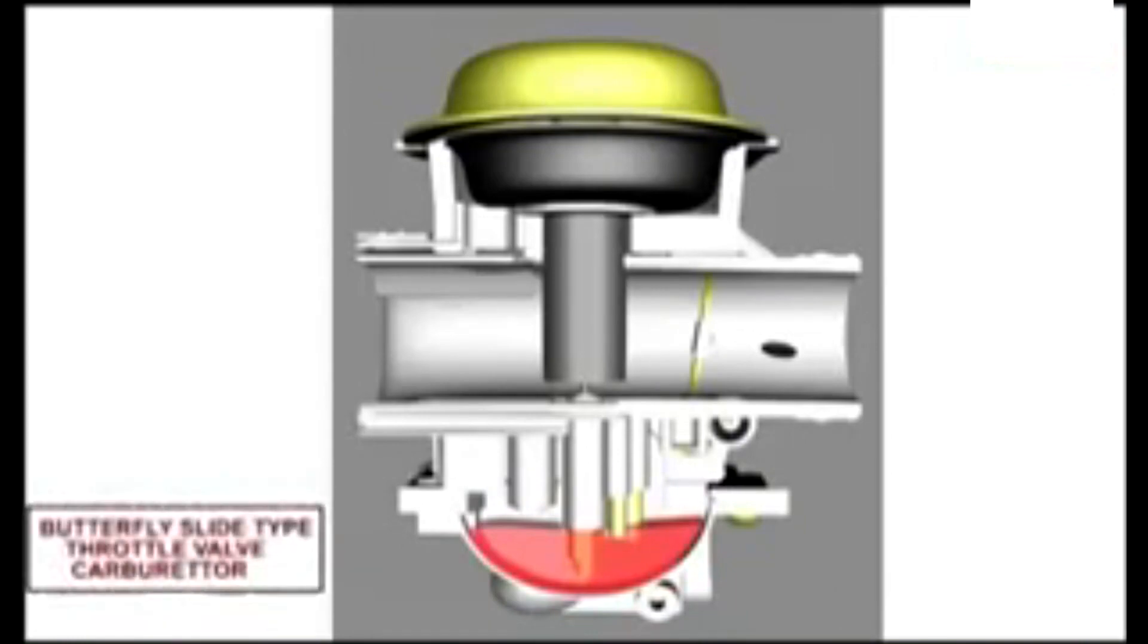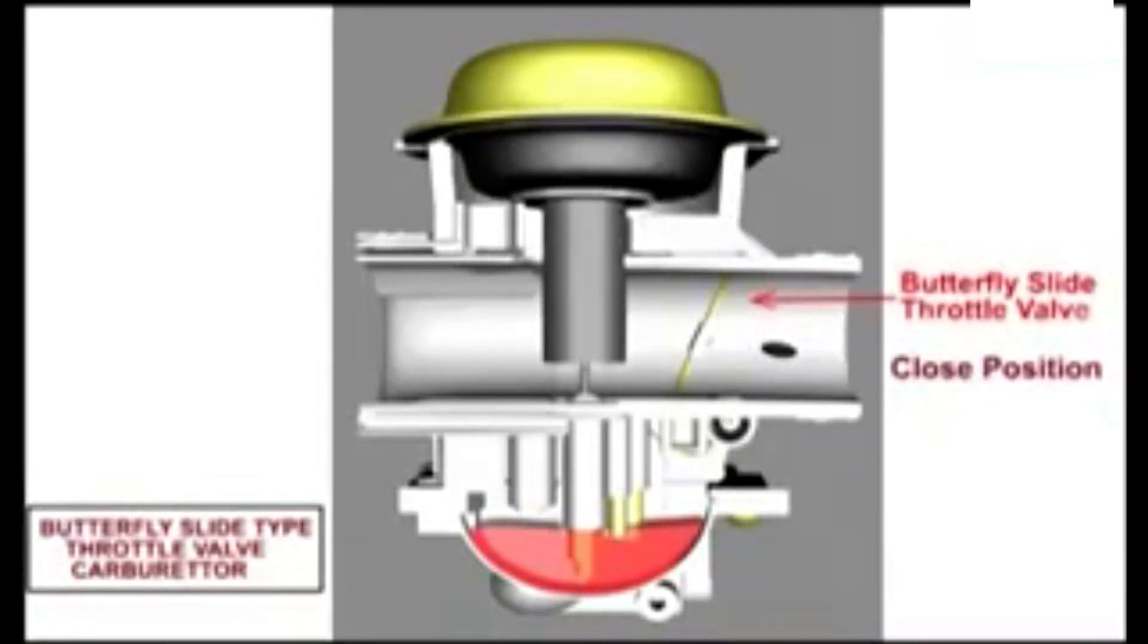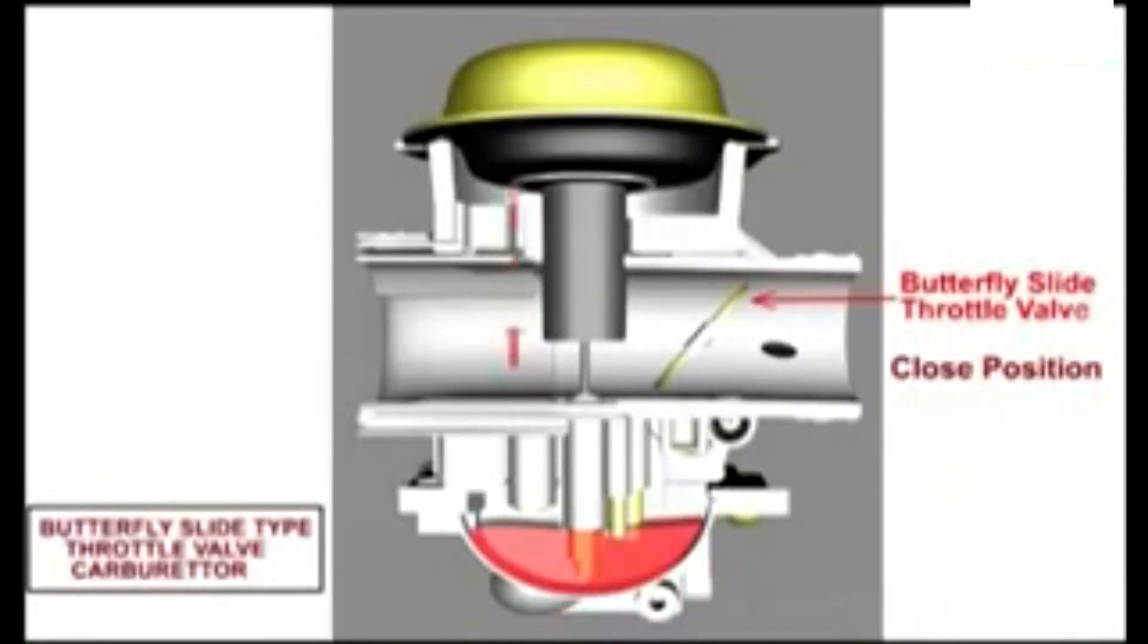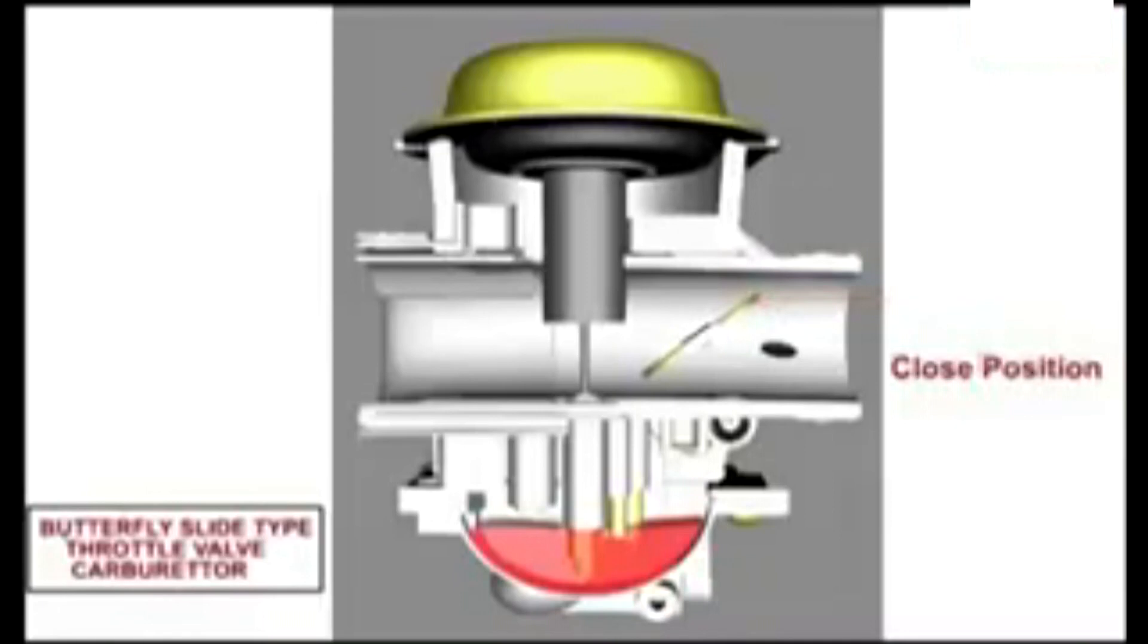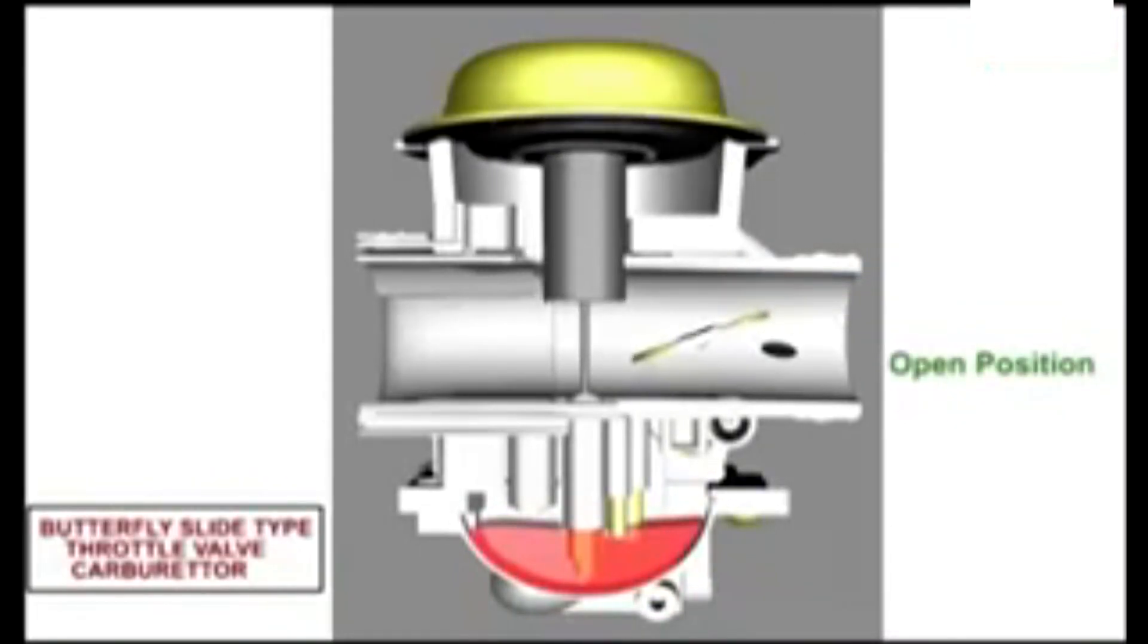In a butterfly slide or CV style carburetor, the throttle cable is attached to the butterfly which controls the air into the carburetor, which indirectly controls the slide moving up and down via the velocity and vacuum created by the air moving through the carburetor.